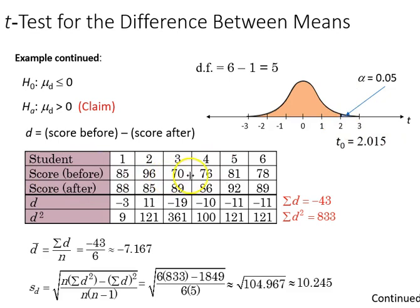Down here, we have our student test scores before and after, our differences for each student, and then the squared differences down here. That gives us those values, which we then plug in down here. So d bar, we find, is going to be the sum of differences over the sample size, which gives us negative 7.167. In our variance down here, calculated to be 10.245.